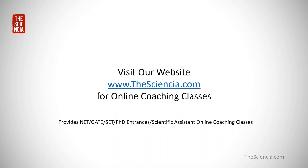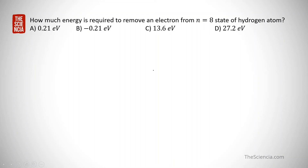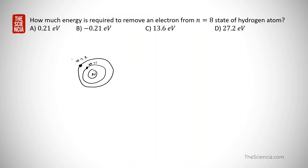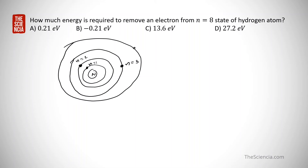This question is related to the hydrogen atom. For a hydrogen atom, there is a nucleus and around it are shells where electrons revolve. The question asks how much energy is required to remove an electron from the N equals 8 state of the hydrogen atom. The energy levels go N equals 1, 2, 3, and so on up to N equals 8.